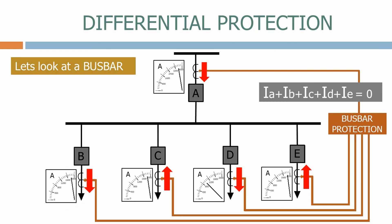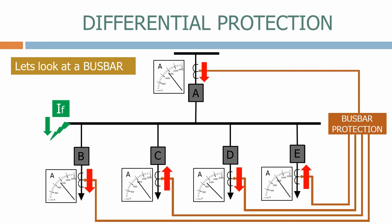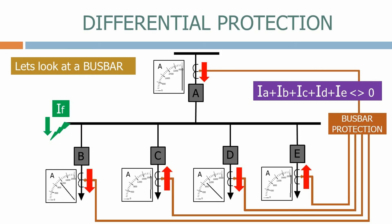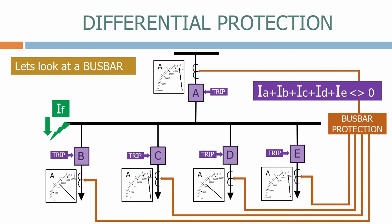Let's now apply a fault on the busbar. The current magnitudes will increase on the incomer and all feeders able to back-feed the fault, but this time, because some current is leaking out of the system, the sum of the currents on the incomers and feeders connected to the busbar no longer equals zero. The busbar protection system operates, tripping all of the circuit breakers connected to the busbar and clearing the fault from the rest of the system.